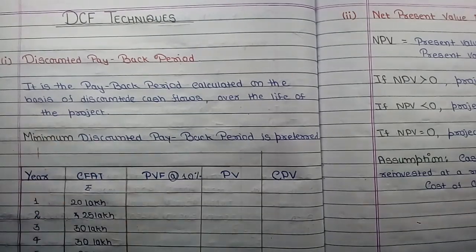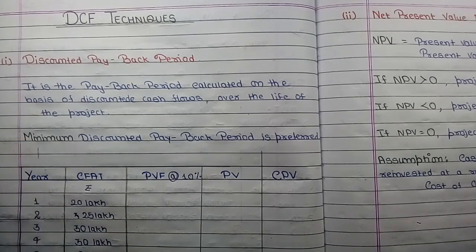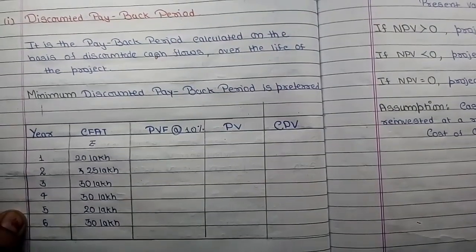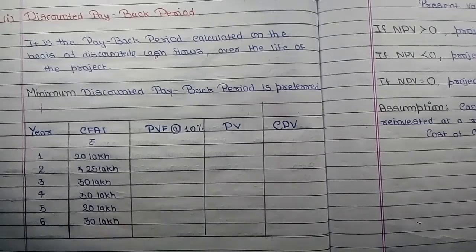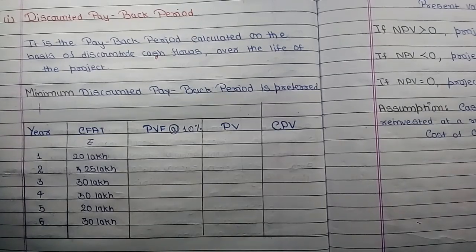First we will see discounted payback period. Discounted payback period method is similar to the payback period method we have seen in non-discounted cash flow techniques. Payback period method considers the time period in which initial investment is recovered. Similarly, discounted payback period finds the period in which we recover the initial investment while considering the time value of money. To understand this method, we will take one example with years and their cash flow after tax. We need to consider the time value of money, and for that we need to find the present value factor.